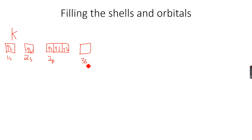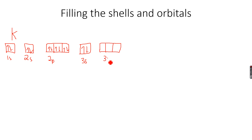3s: we have 1 and 2 electrons here, so now we are left with 7 electrons. Then from 3s we go to 3p: 1, 2, and 3 orbitals. Now we are left with 4 electrons — then 1, 2, and 3 — and we are left with 1 electron.